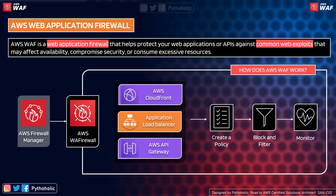Taking AWS WAF specifically, you can integrate it with CloudFront, a load balancer, or API Gateway. The first step is to create a policy — you can use the policy builder, write it in JSON, or use third-party policies from the AWS Marketplace. The second step is to block and filter: you can filter common exploits like SQL injection and cross-site scripting, and block requests based on IP. The third step is to monitor: you can gather metrics and logs using Amazon CloudWatch and stream them using Amazon Kinesis Firehose.